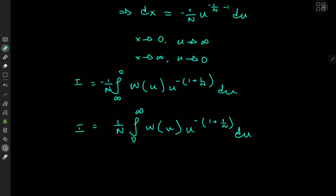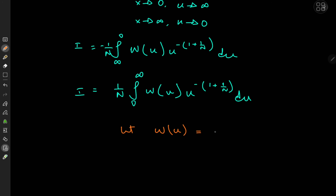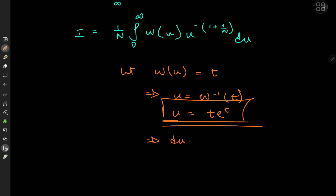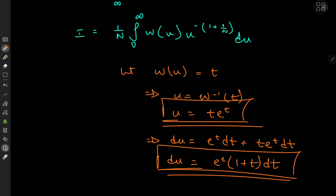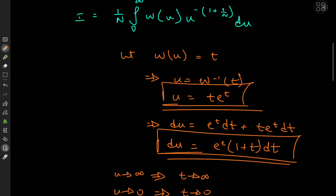Now we could use yet another transformation, and this time we're going to be more direct: we take Lambert W of u and set it equal to t. This implies that u equals the inverse of W, which is t times e to the t. Differentiating yields du equal to e to the t dt plus t times e to the t dt, which we factor as e to the t times (1 + t) dt. As for the limits: u approaching infinity implies t approaching infinity, and u approaching 0 corresponds to t approaching 0, so the limits of integration are unchanged.